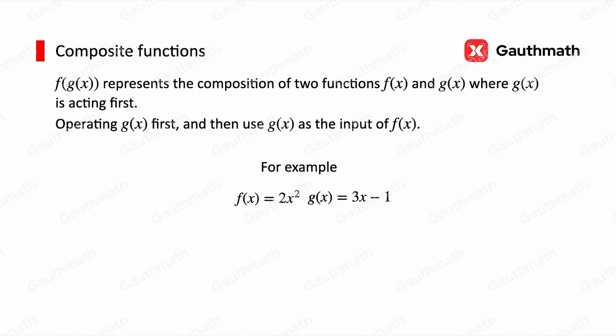For example, if we have f(x) = 2x² and g(x) = 3x - 1, then we substitute g(x) into f. So f(g(x)) = 2(3x - 1)².